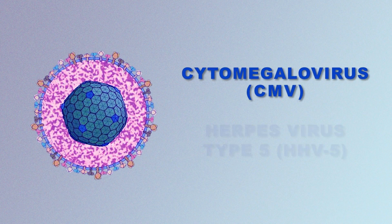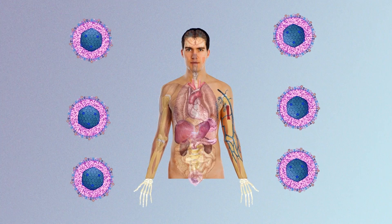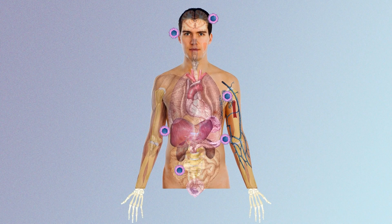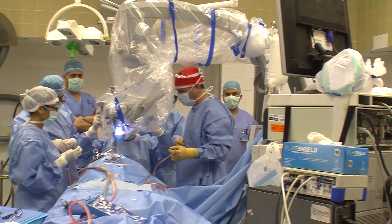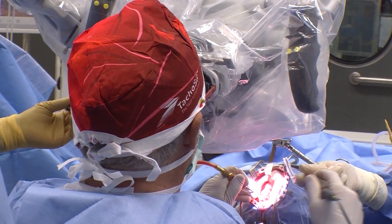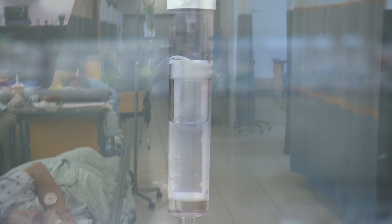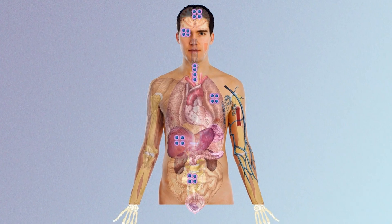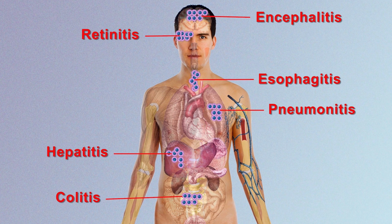Cytomegalovirus, which is a herpes virus, is very common — present in the body of the majority of the adult human population worldwide. If our immune system becomes deficient, which can happen for many different reasons — people that undergo surgery such as an organ transplant, a bone marrow transplant, or even people in intensive wards because of acute sepsis — then this virus can reactivate and cause disease that can even lead to death.